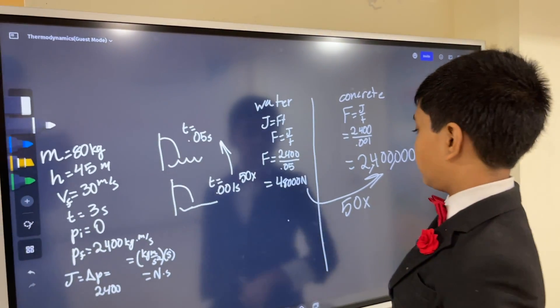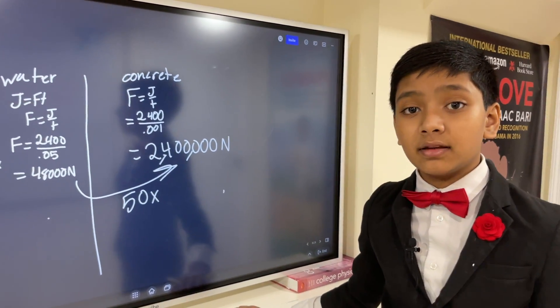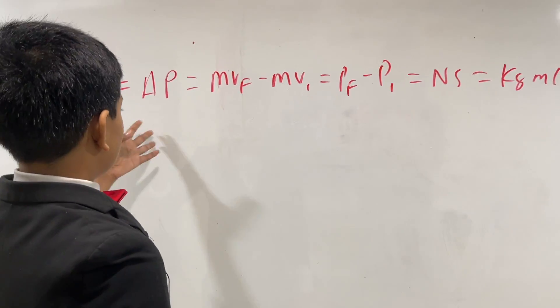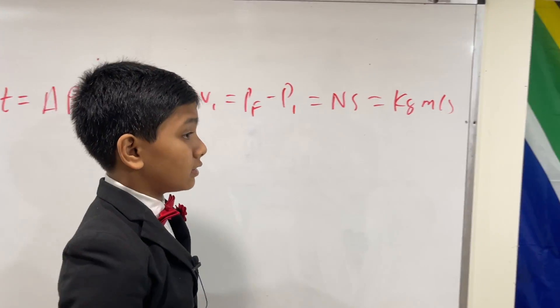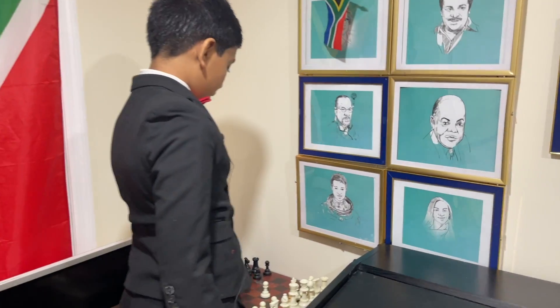So this one, he might survive with the proper equipment. This one, he won't survive with the proper equipment. Okay, that's all about impulse and how it's equal to delta p and the unit. So that's it. Thank you, everybody, for watching. See you next time.